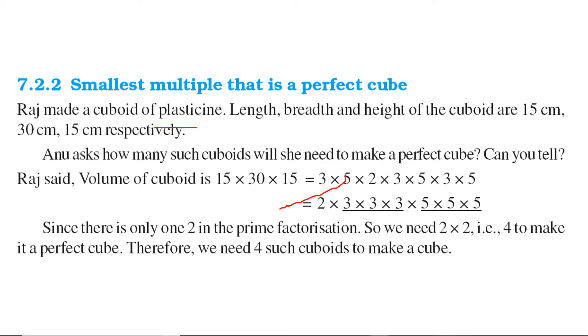Length, breadth and height of the cuboid are 15 cm, 30 cm, and 15 cm respectively. So Anu now asks how many of these cuboids can be taken to make a perfect cube. Now can you tell? Let us see.